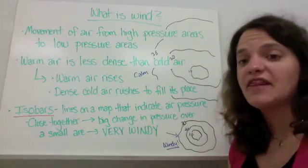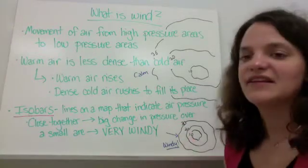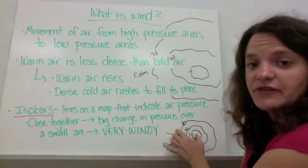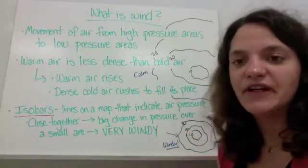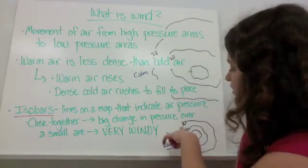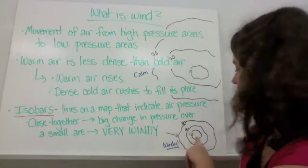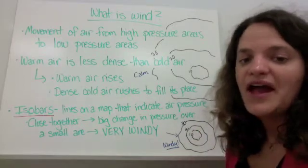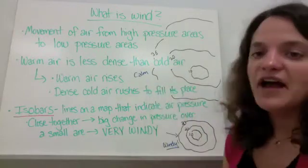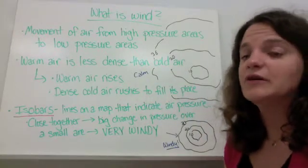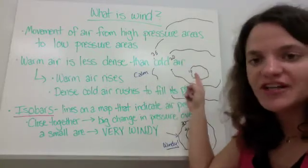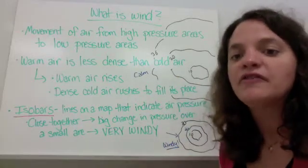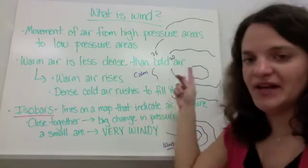If isobars are closer together on a map, that indicates a big change in pressure over a small area, which means it's very windy. Air moves quickly from higher pressure areas, like 30, to lower pressure areas, like 10. If isobars are spaced further apart, then it's calm or fair. The air still moves from higher to lower pressure, but more slowly, taking more time to move from one pressure measurement to the next.